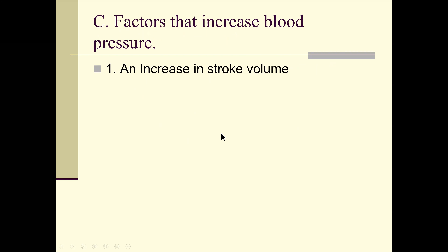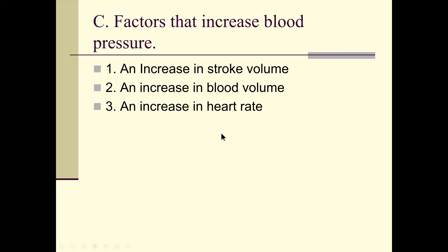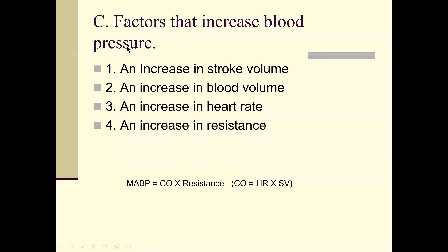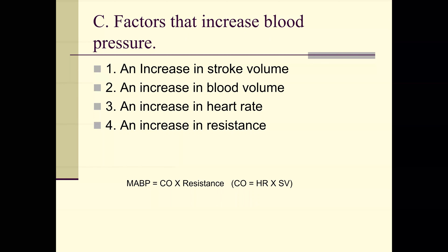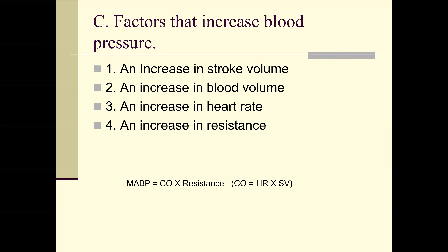Factors that increase blood pressure: increase in stroke volume, increase in blood volume, increase in heart rate, and increase in resistance. Mean arterial blood pressure equals cardiac output times resistance. If you have more volume, more stroke volume, higher heart rate, or more resistance, your blood pressure goes up.